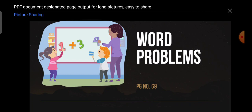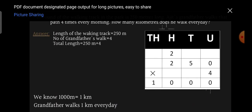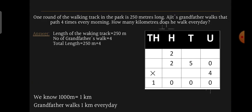Children, let's do the word problems from page number 69. To do these word problems, you have to take a fresh page in your math notebook, write down the heading 'Page Number 69 - Word Problems.' You can refer to your textbook page number 69. Now let's do the first sum.